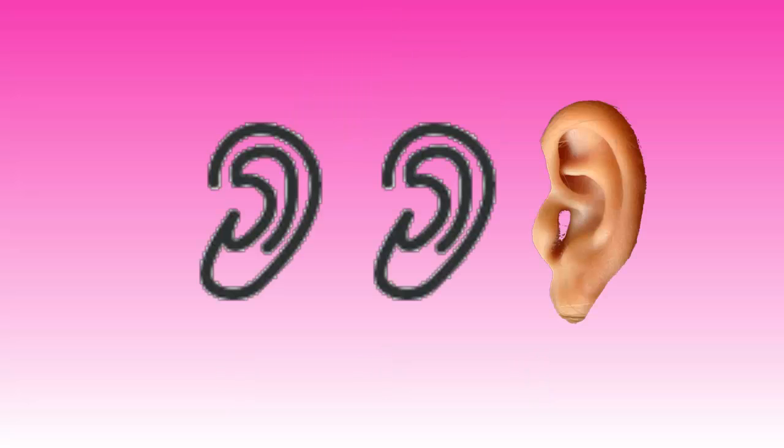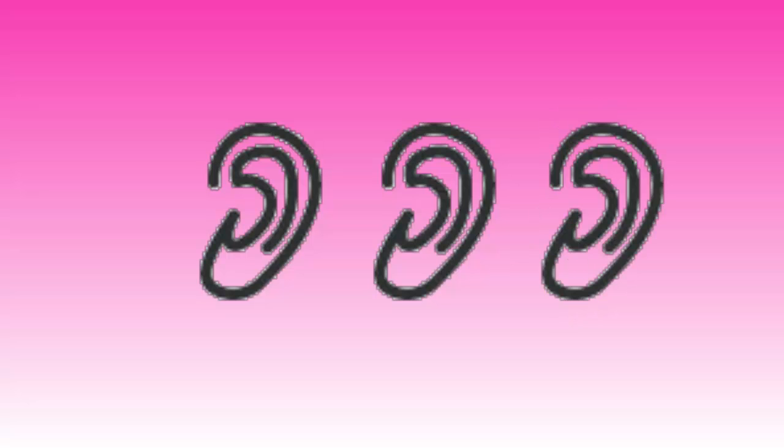In short, you need at least two auditory sensors and a shaped ear to determine the direction of a sound, although three auditory sensors would negate the necessity of a shaped ear. I hope you learned something today and I will see you next time.